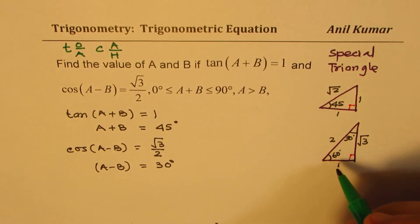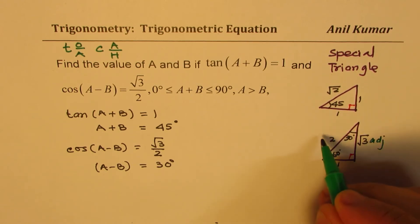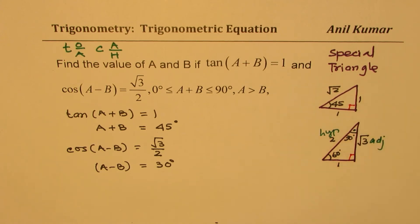So when we say √3/2, then we have to look at this as the adjacent side, and that is the hypotenuse for angle 30 degrees.